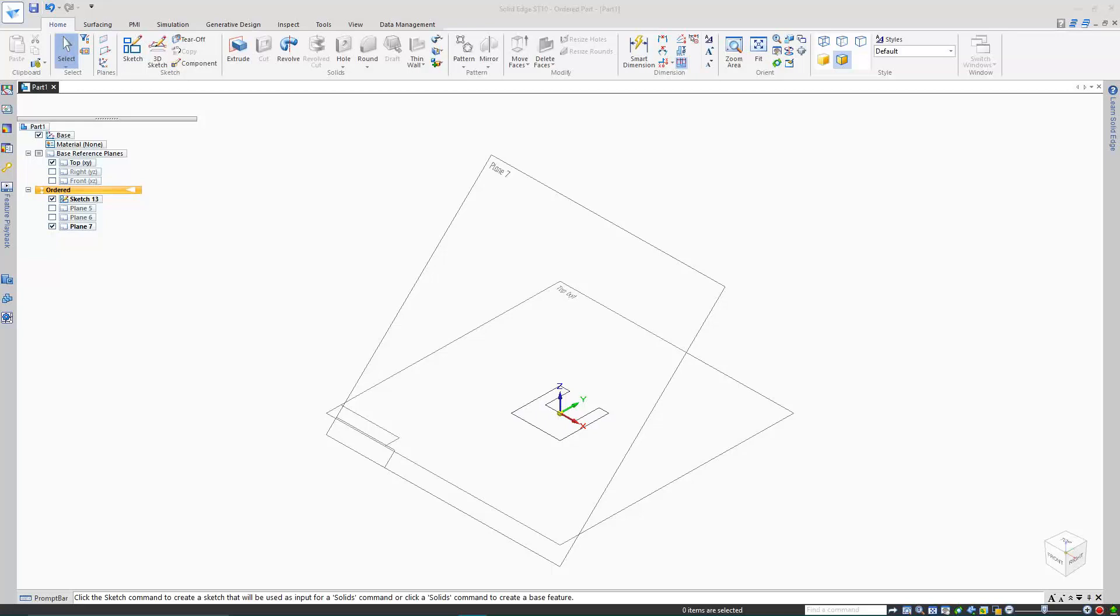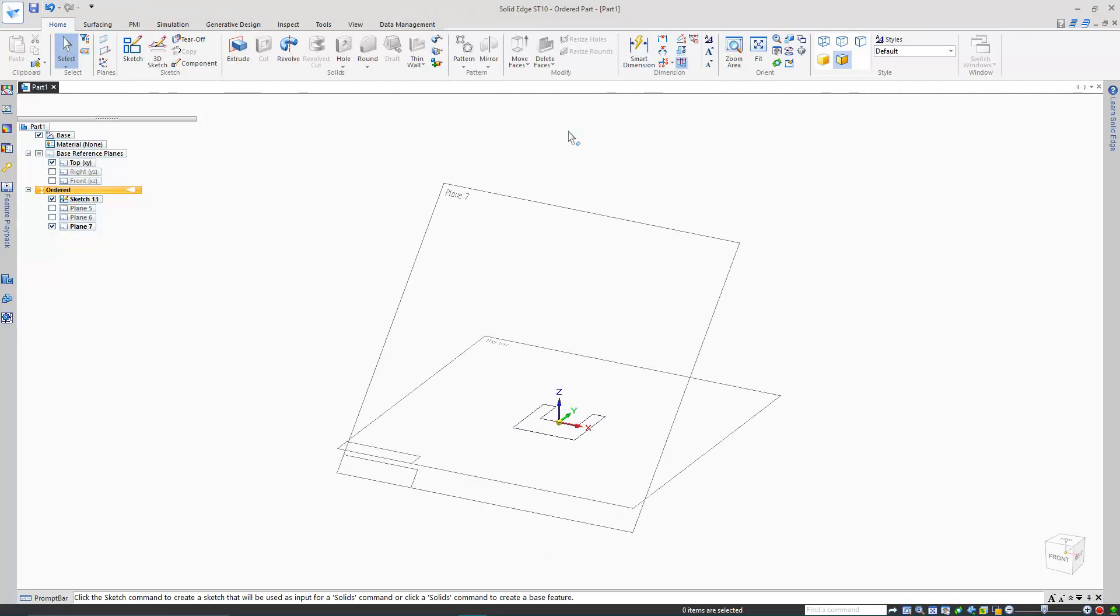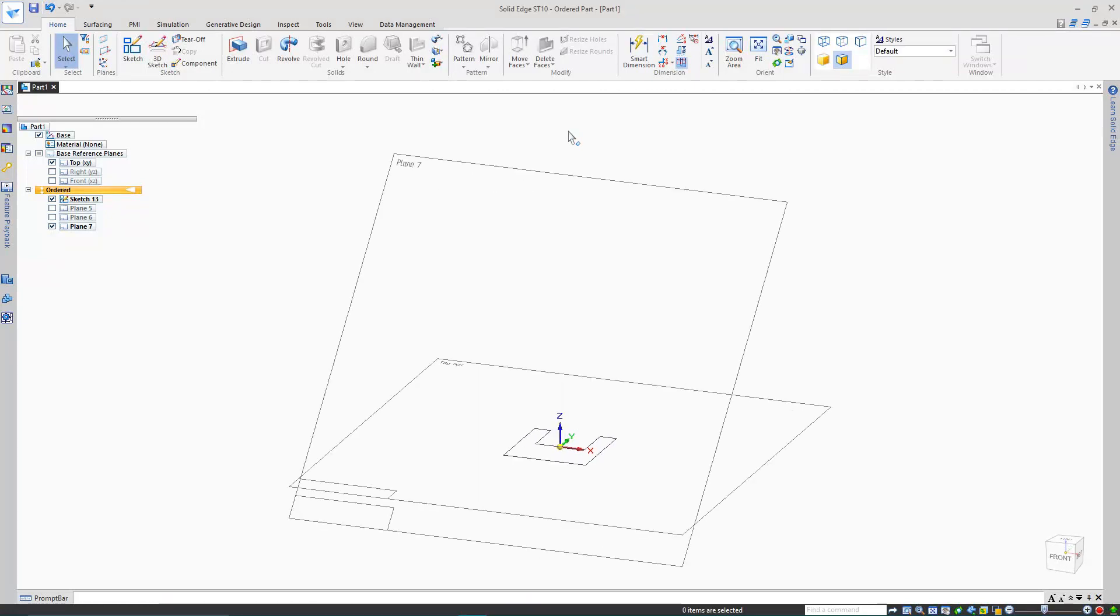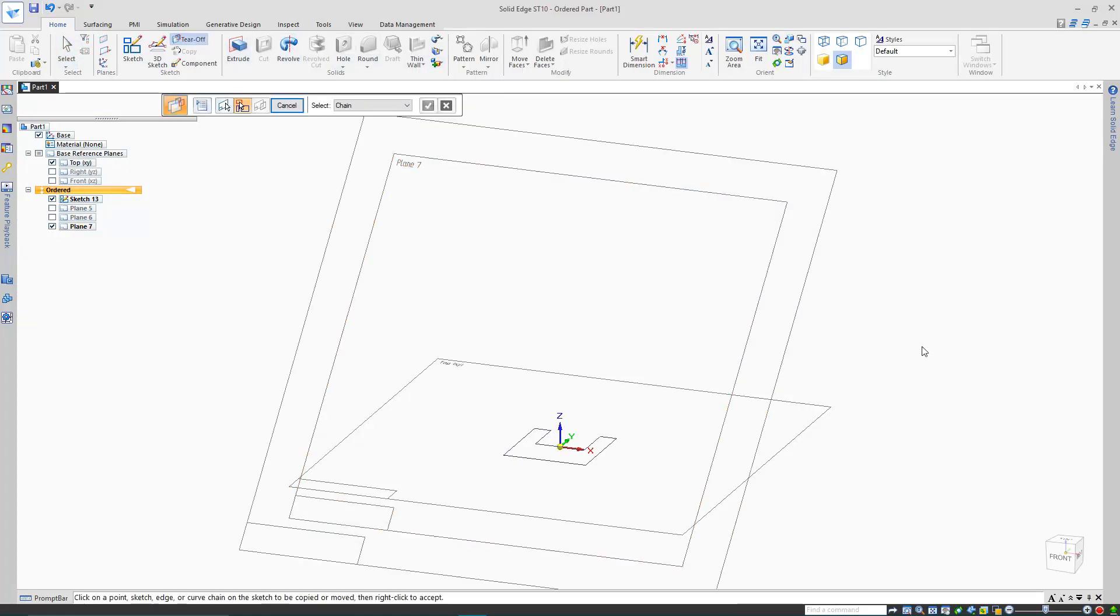In my example here, I've created two angled planes, and a profile sketch for a loft feature on the first one. As there's a sketch in the model, tear off sketch is available. Bear in mind also that this is only available in the ordered environment. I'll select it, specify a plane, and then choose the sketch elements to place onto the new plane.